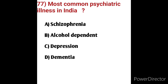Question 77: Which is the most common psychiatric illness in India? Options: A) schizophrenia, B) alcohol dependence, C) depression, D) dementia. According to WHO data, at least 57 million people in India are affected by depression — one in every seven persons. So option C, depression, is the correct answer.